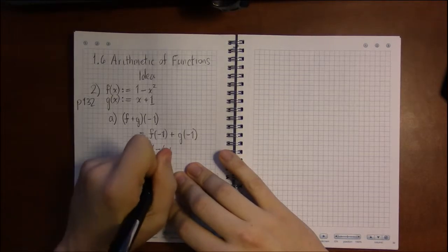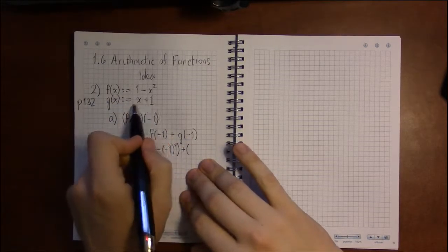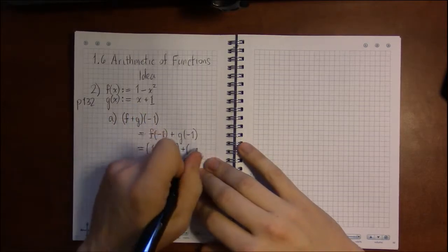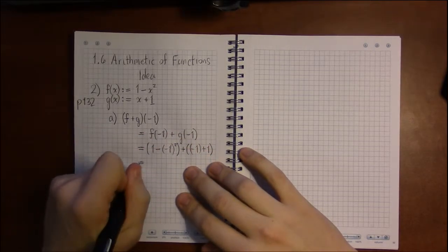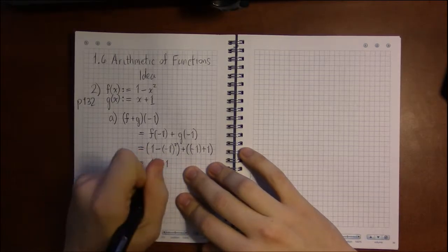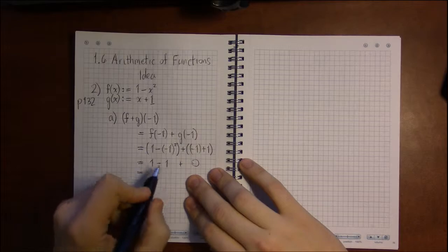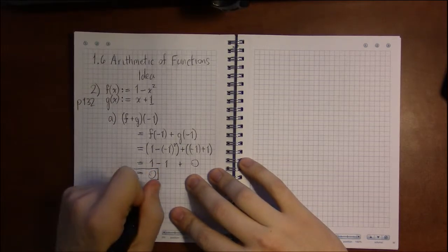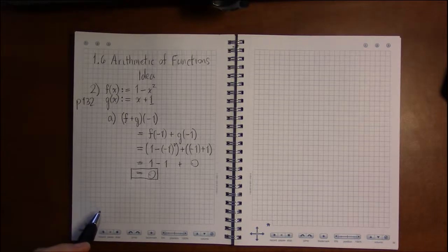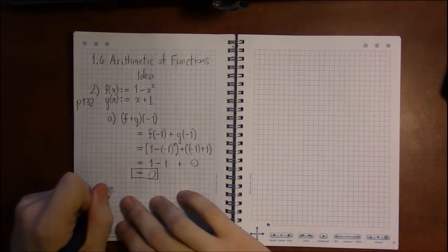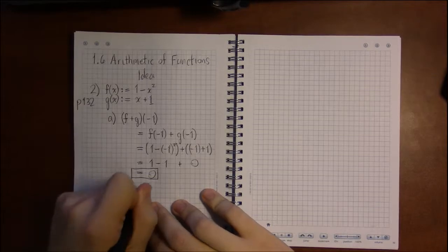So we plug minus 1 in for x. For f, we get 1 minus (minus 1) squared. For g, we replace x with minus 1: minus 1 squared is just 1, and minus 1 plus 1 is 0. So f plus g at negative 1 is 0.